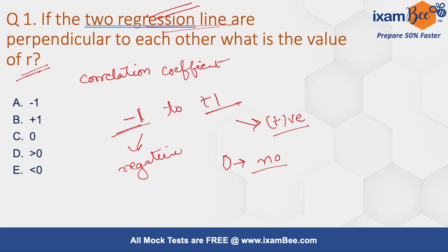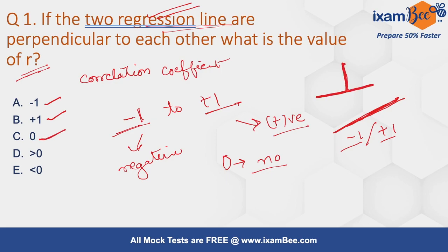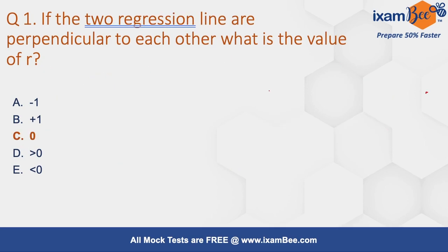If the lines coincide with each other, the coefficient can be minus one or plus one, because in that scenario we cannot say it is negative or positive, but the lines will definitely coincide. If the value for the correlation coefficient is zero, then the lines will be perpendicular to each other. So the answer for this question is C — zero — because the lines are perpendicular here.